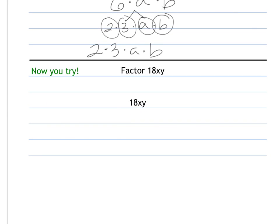Now you try. Simple as that. I might bring this down. This is the same as 2 times 9xy. That's 3×3, then my x and my y. So I have 2×3²×x×y.